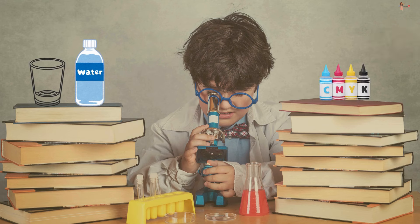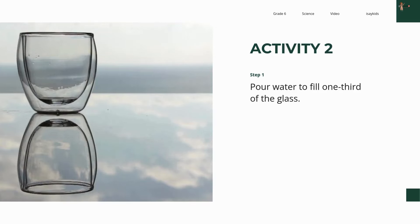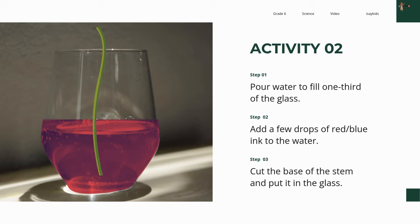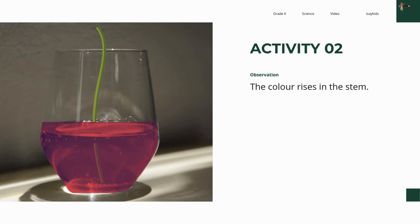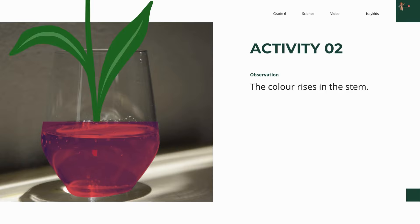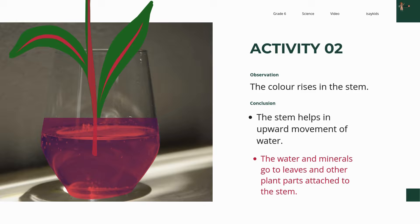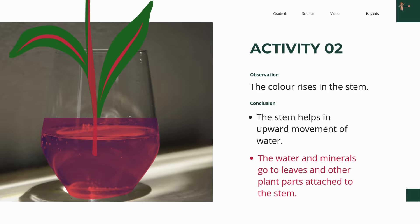Pour water to fill one third of the glass. Add a few drops of red or blue ink to the water. Cut the base of the stem and put it in the glass as shown here. Observe the setup — does the color appear in the stem? You will find that the color rises in the stem. If you take a stem with leaves and keep it for a long period, the color appears in the veins of the leaves also. From this activity, we see that the stem helps in the upward movement of water. The water and minerals go to leaves and other parts of the plant attached to the stem.